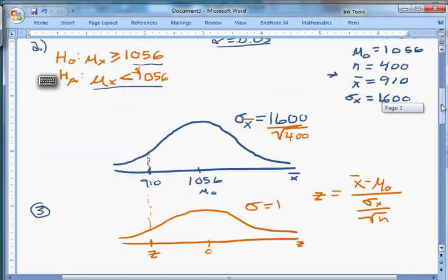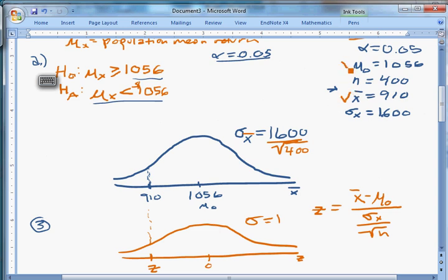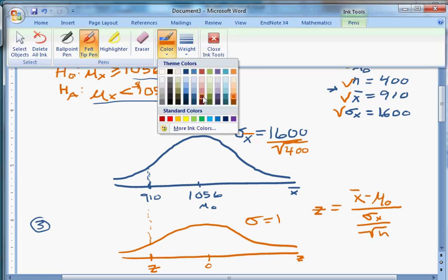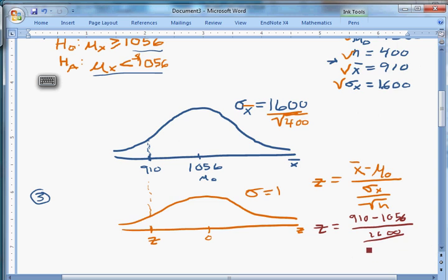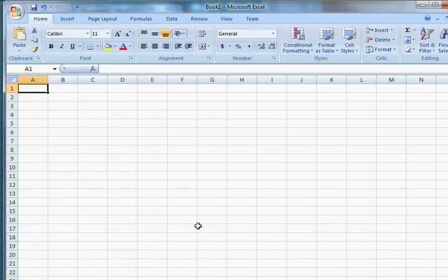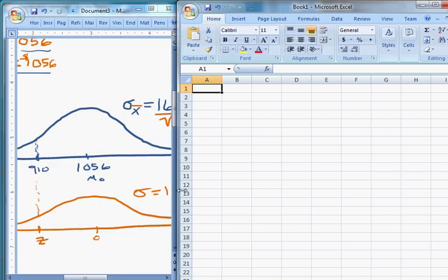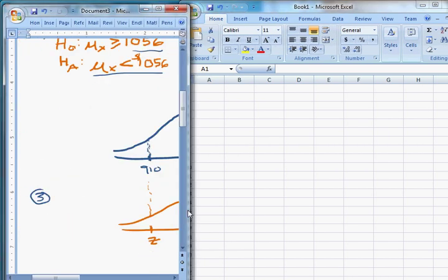That's our test statistic. And all it is is what you end up with in the score function if you relate these. It's just a standard normal, or it's just a normal distribution problem because of all the stuff we've been learning about. Do we have the stuff we need? Let's see. We have an x-bar. We have a mu0. We have a sigma x. We have an n. So we can move on to step four. Just compute the value of this test statistic. So what is z going to be? It's going to be 910 minus 1056 divided by 1600 over the square root of 400.